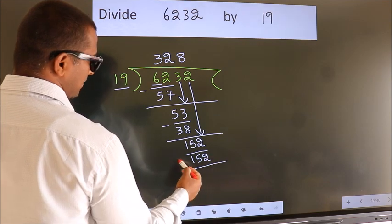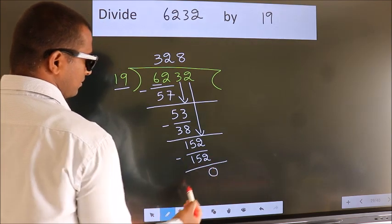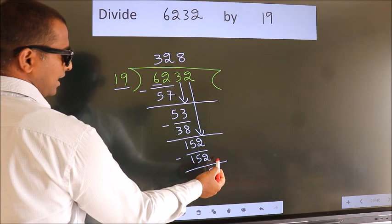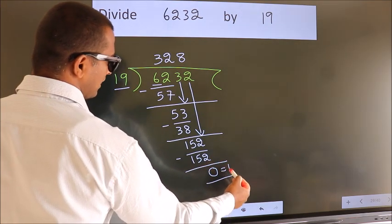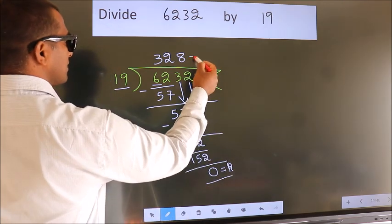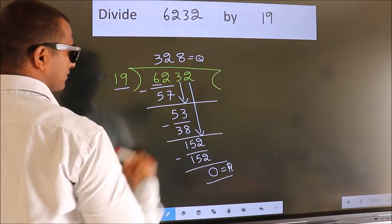Now, we subtract. We get 0. No more numbers to bring down. So, we stop here. This is our remainder. This is our quotient.